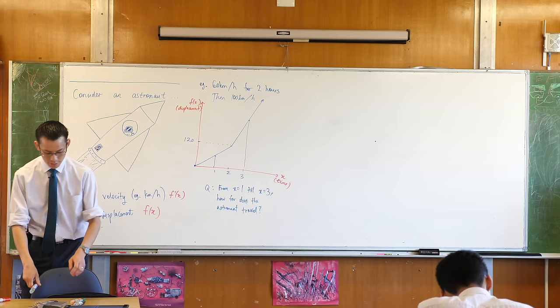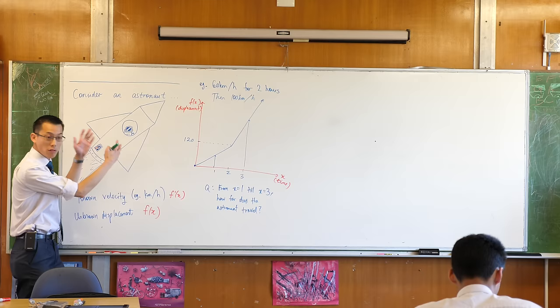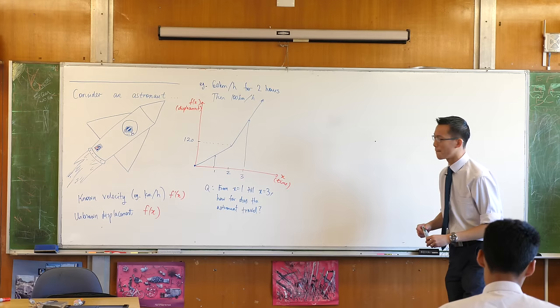Now you can help me work this out, can't you? How am I going to find out how far the astronaut travels given all this information? No velocity, but I'm trying to work out something about displacement when I don't even know what the function is. What am I going to do? Any suggestions?